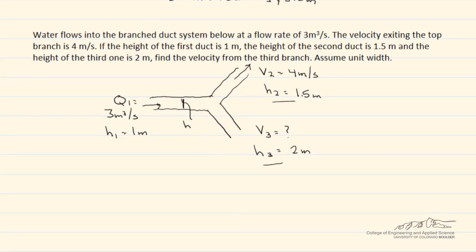What we want to do is find the velocity from the third branch. Note it says assume unit width. There are two ways to look at this. Instead of using VA for our continuity equation, we can use VH in meters squared per second. Some people like to say the width back into the page is 1 meter. Either way we'll get the same answer.